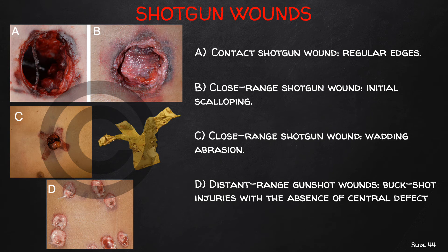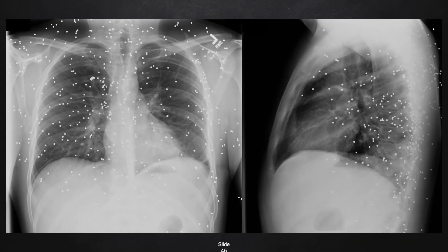Examples of shotgun wounds include: figure A — a hard-contact shotgun wound to the head with a single regular defect; figure B — a close-range shotgun wound with initial scalloping; figure C — a wadding abrasion due to the wad impacting the skin; and figure D — a distant shotgun wound showing separate single round lesions due to individual pellets penetrating the skin. A post-mortem radiograph in a shotgun wound death shows all the small metal spheres distributed within the body tissues, which is typical of pellets fired from a smooth-barrel shotgun.